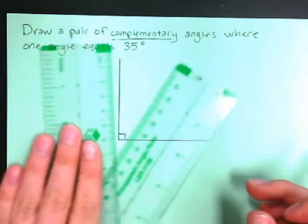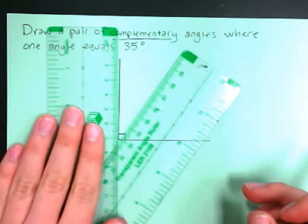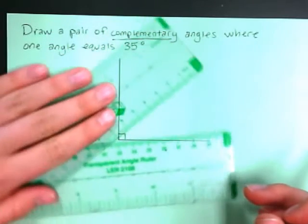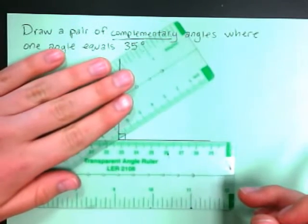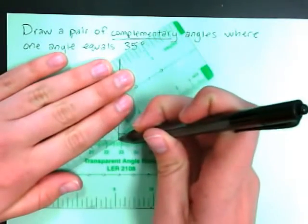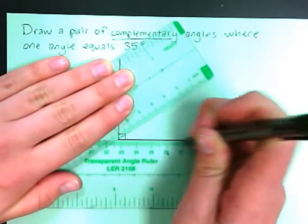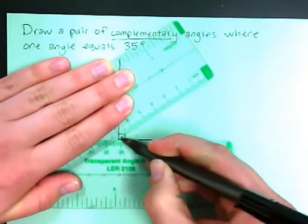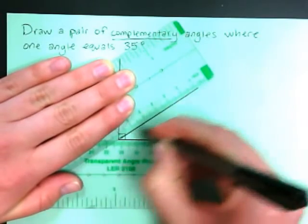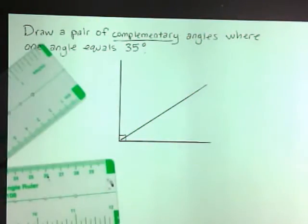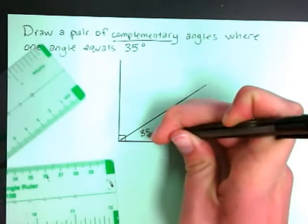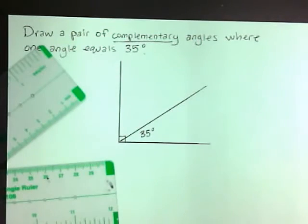I can either place it right here, or I can do it right up here at the top. Either way will be fine. I'm going to draw mine right here. So one of the sides of this angle is just the bottom of my 90 degree angle. So the other side of this angle goes right up here, and I know that that equals 35 degrees.